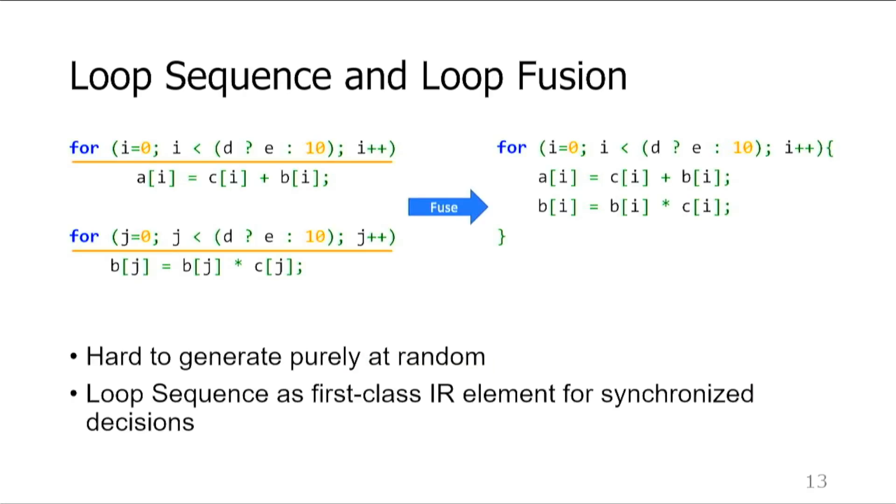Let's say we want to trigger a loop fusion. To do that, we need to have two consecutive loops with exactly the same iteration space and no dependencies. The odds of getting them are quite low if we rely on purely random generation. We introduced loop sequence as a first-class element in our IR to eliminate this problem. It allows us to make synchronized decisions such as the same iteration space and shape the high-level structure of the test. This is an example of a coarse-grained generation policy that affects several statements at a time.